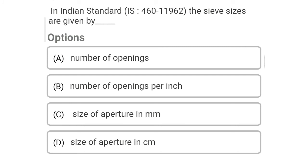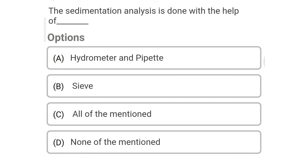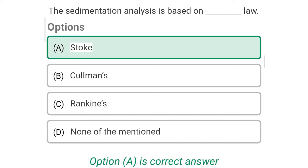So next question: an organic soil sample is kept in the oven for water content determination; the preferred temperature is — Option A: 60°C. Option B: 80°C. Option C: 105°C. Option D: 110°C. The correct answer is Option A, 60°C. So next question: in the calcium carbide method, the gas produced is — Option A: methane. Option B: carbon dioxide. Option C: acetylene. Option D: oxygen. The correct answer is Option C, acetylene.